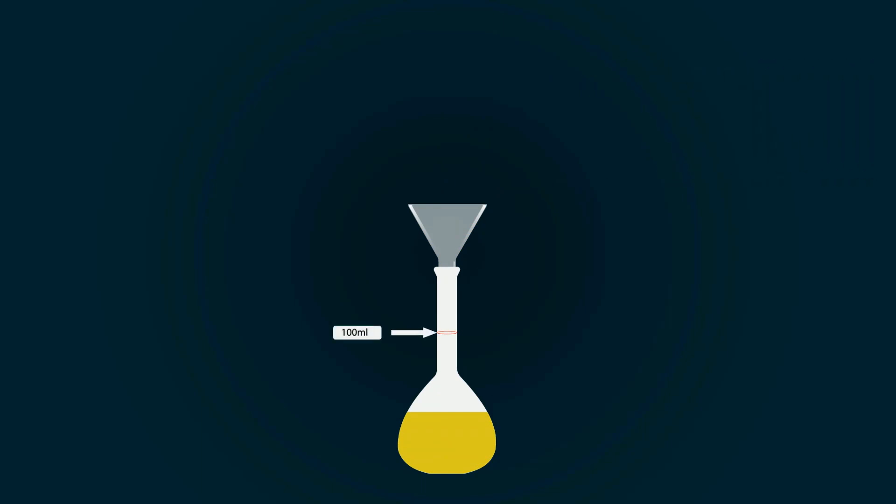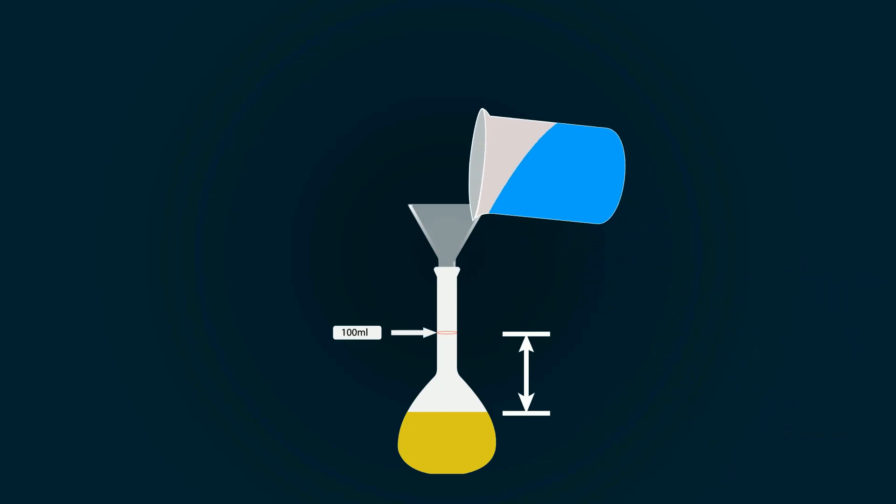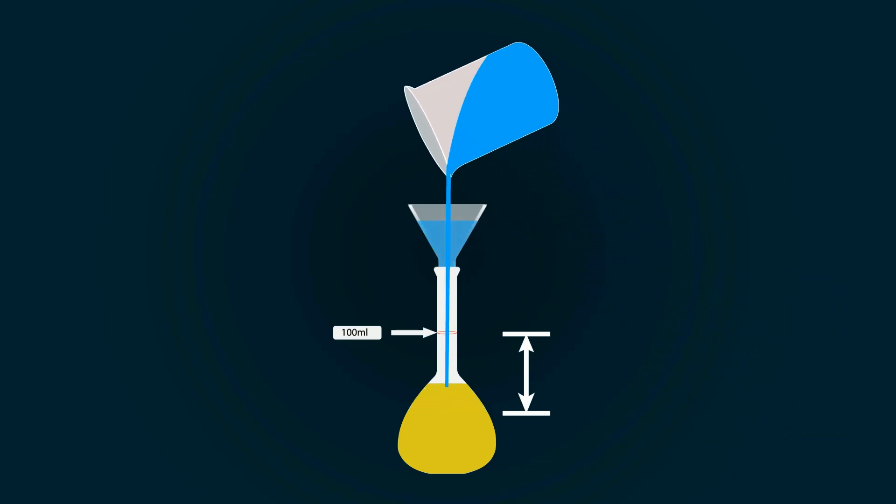You have to fill it up to the 100 milliliter point. For that you have to add more distilled water in it. So take some distilled water into an empty beaker and pour it into the measuring flask to fill it up to the 100 milliliter point.